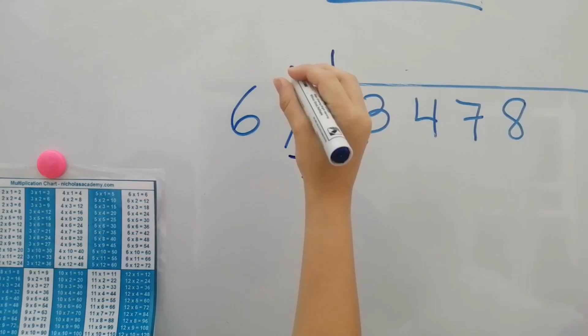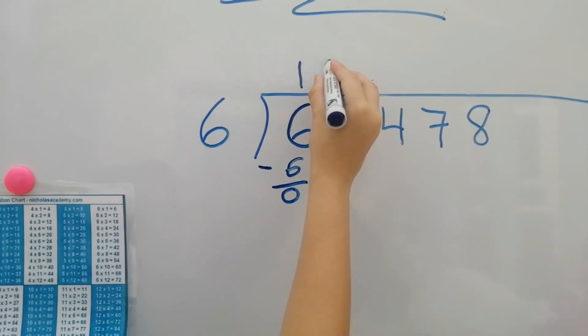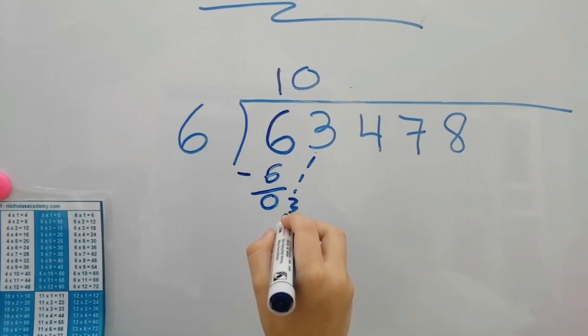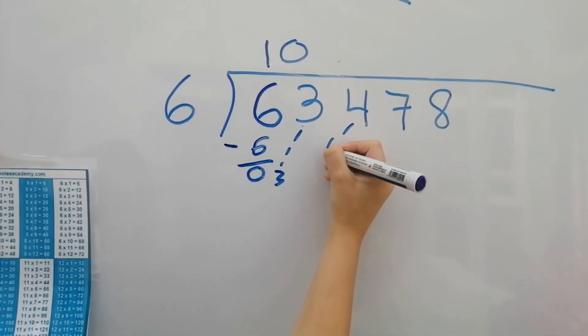Three. Six into three is zero. Put the next number down.